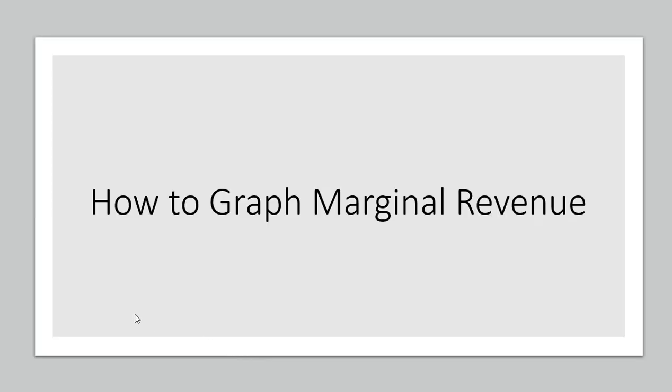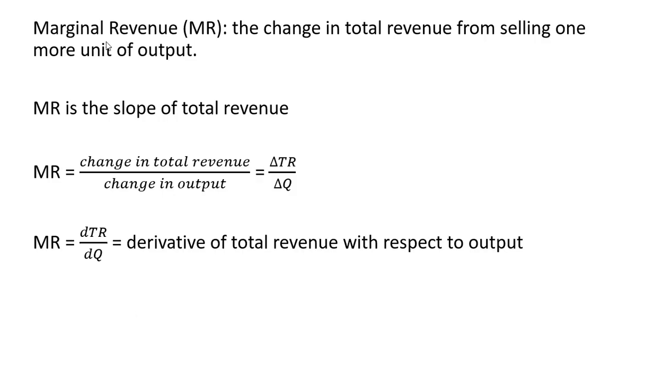In this video, we're going to look at how to graph marginal revenue. So some basics. Marginal revenue is the change in total revenue from selling one more unit of output. Marginal revenue is the slope of total revenue.